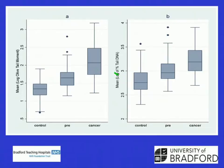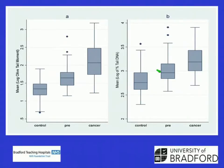Looking at the olive tail moments again, you can see there is good separation, whereas with the percentage tail DNA parameter there is a bit more overlap with the control. However, the pattern of response is the same whichever parameter you use.